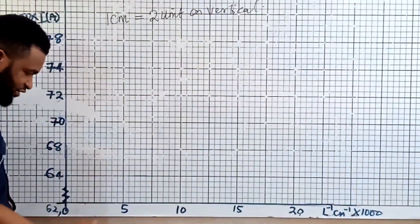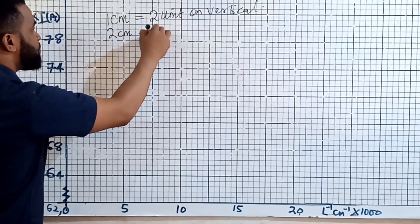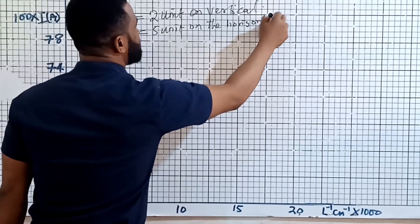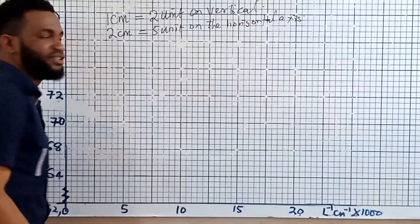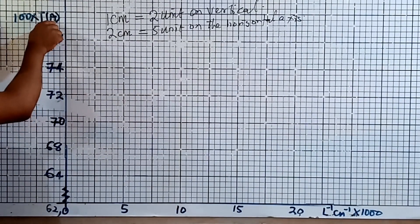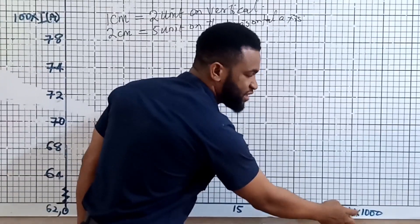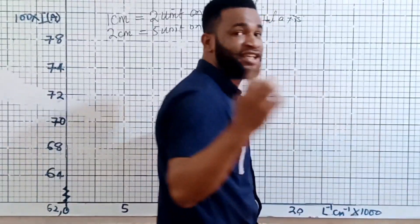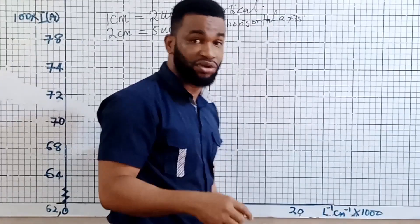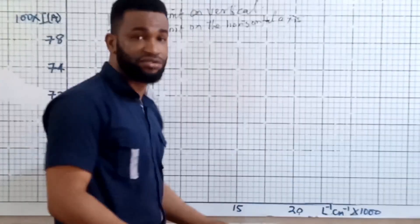Now on the horizontal axis, I am going to say that 2 cm is equal to 5 units on the horizontal axis. So this is my scale. In every graph, you need to write the scale. You write the unit of what you are plotting — I am plotting current, which is measured in amperes on the vertical. I am plotting L inverse, which is also cm inverse. And I multiply by the handle. So any examiner who sees that you multiplied by 1000 will know that you are coming from a decimal table of values.